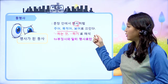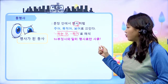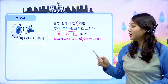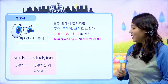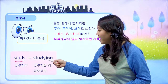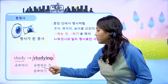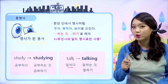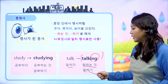동명사는 주어, 목적어, 보어 역할을 하고, 해석은 뭐뭐 하는 것, 뭐뭐 하기로 합니다. 예를 들면, study 하면 공부하다 라는 뜻인데 여기에 ing를 붙여 동명사가 되면 공부하는 것, 공부하기 이렇게 해석하면 되고, talk는 말하다 라는 동사인데 ing를 붙여서 말하는 것, 말하기 라고 해석이 됩니다.